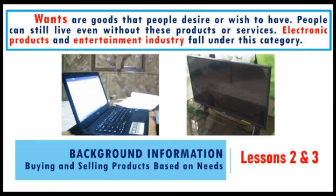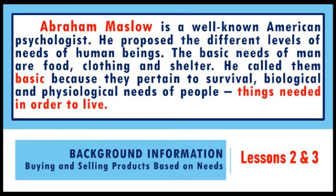Electronic products and the entertainment industry fall under the category of wants. Abraham Maslow is a well-known American psychologist. He proposed the different levels of needs of human beings. The basic needs of people are food, clothing, and shelter. He called them basic because they pertain to survival, biological, and physiological needs — things needed in order to live.